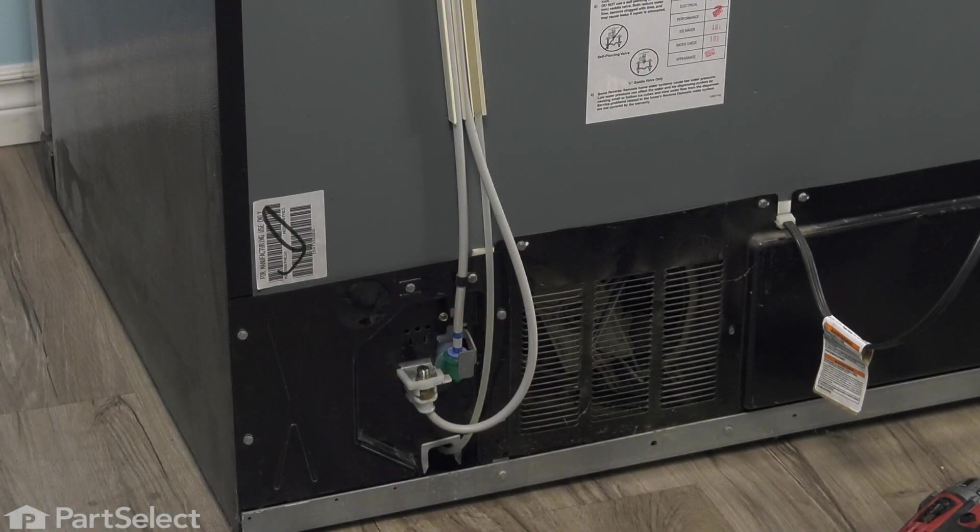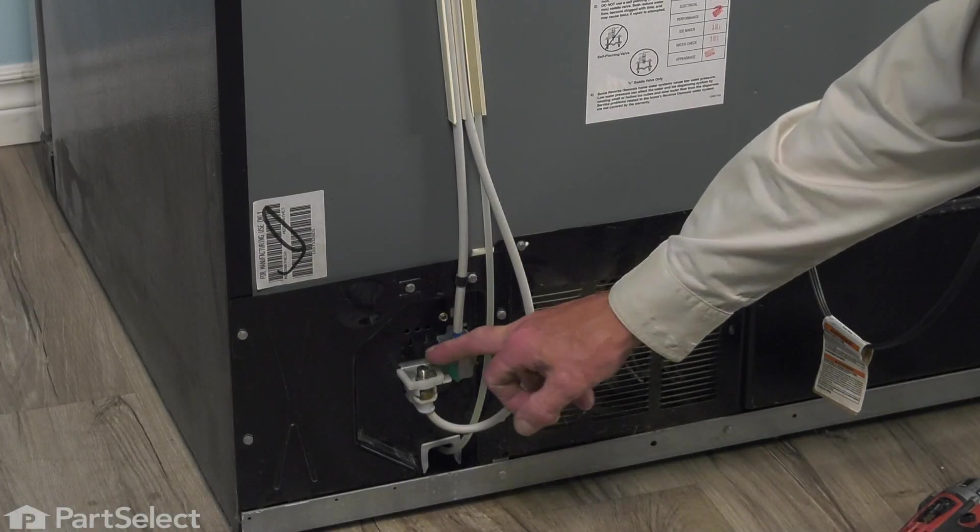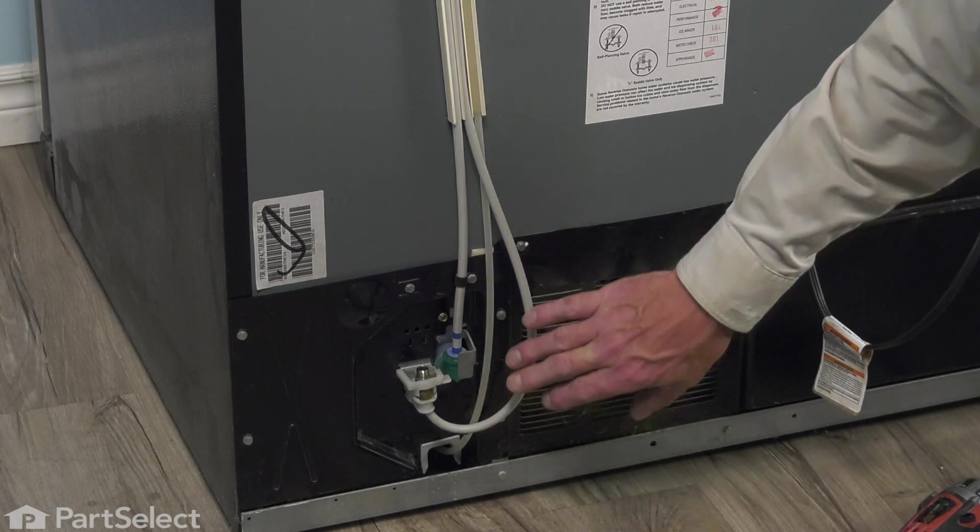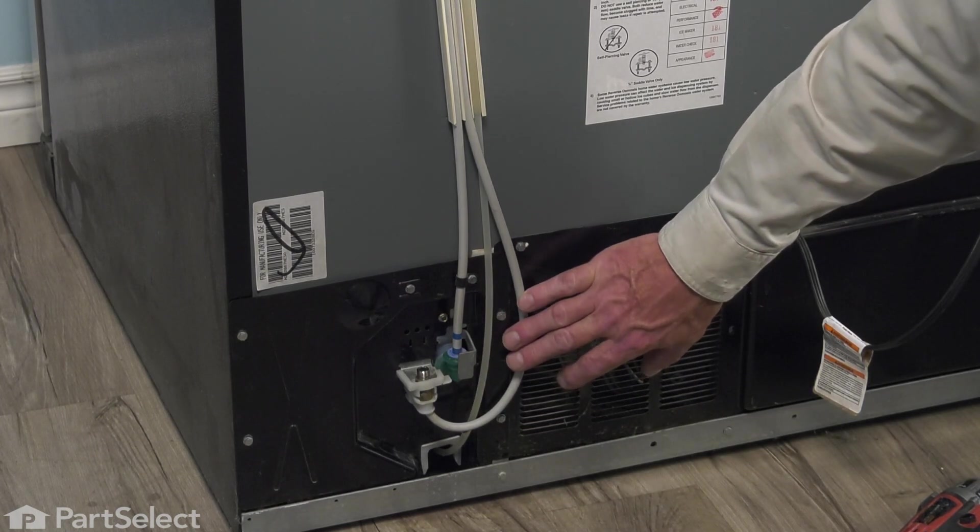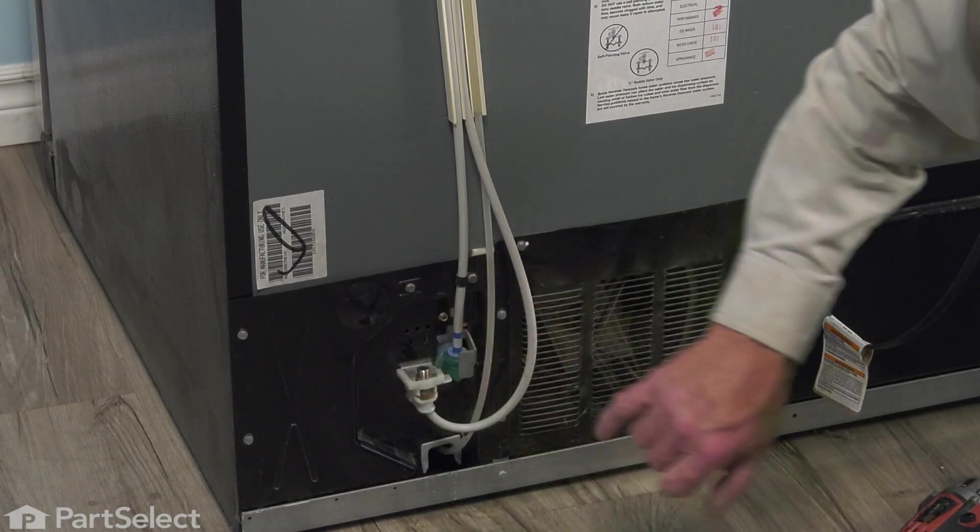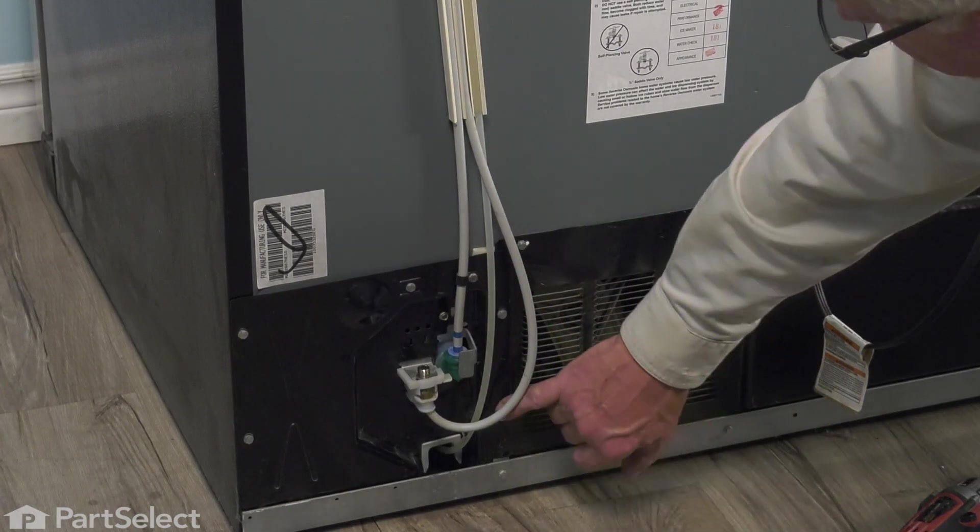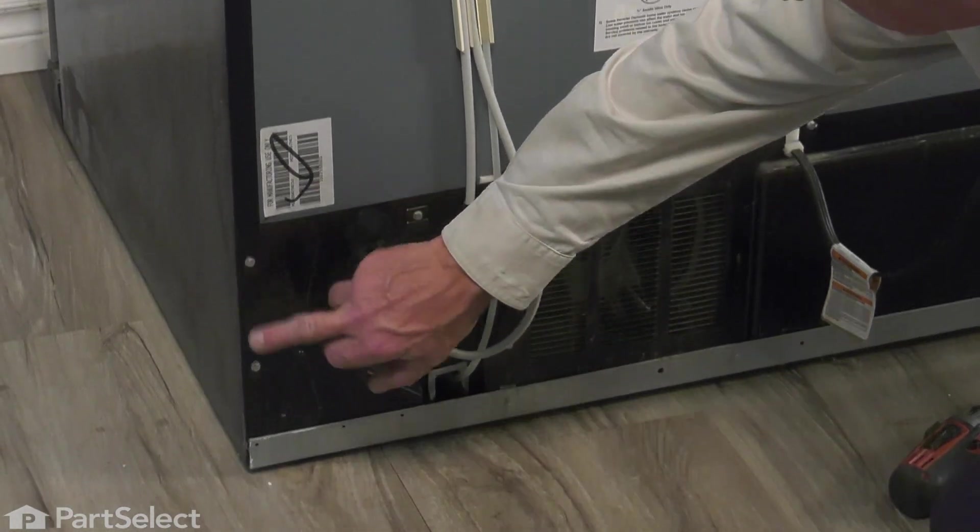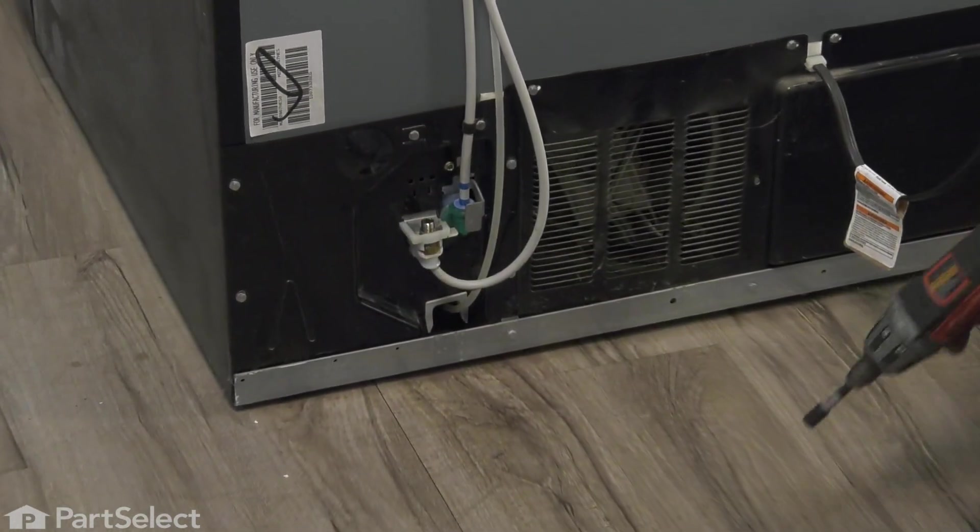Now that we have access to the back of the refrigerator, we've disconnected the inlet water supply to the refrigerator. Next, we need to detach that coupling from that bracket. To do so, we're going to remove two screws on either side and pull that bracket out.